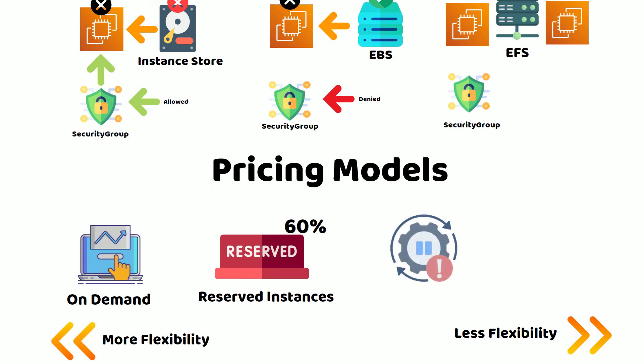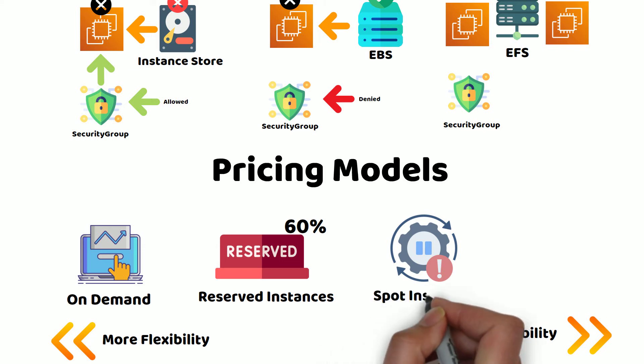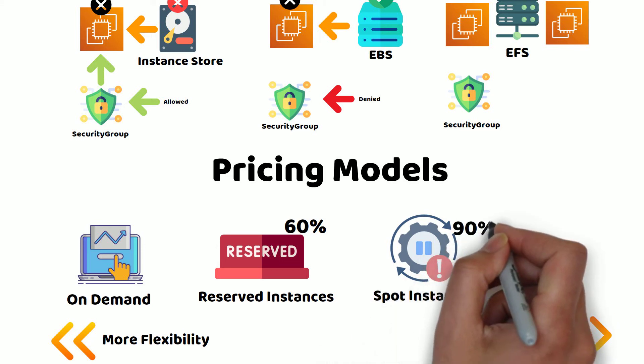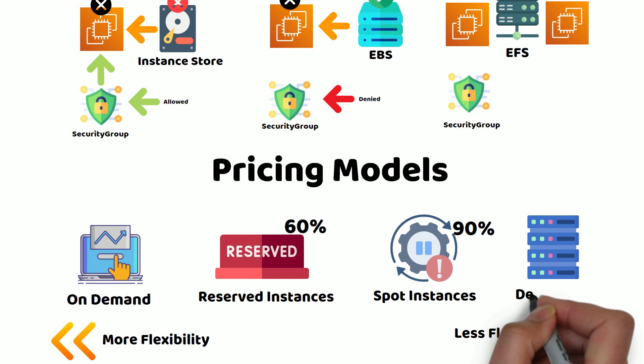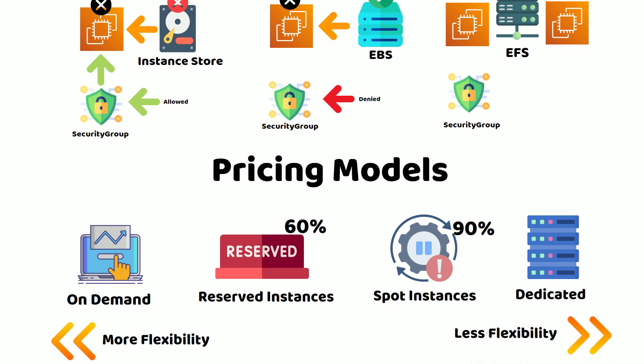If your workload can tolerate interruptions, you can use spot instances and save as much as 90% without any commitments. Lastly, if your workload requires strict compliance, you can use a dedicated host, which is a physical EC2 server dedicated just for your use.